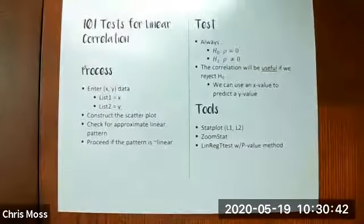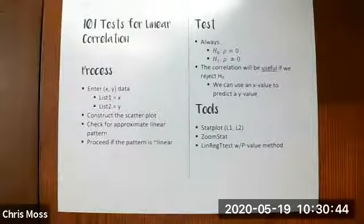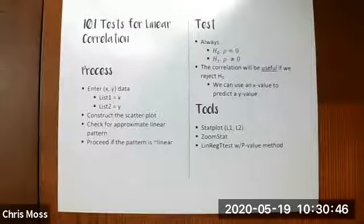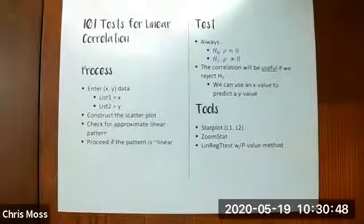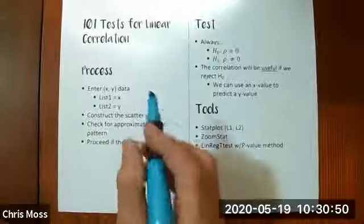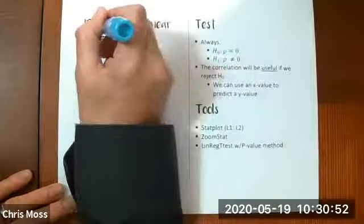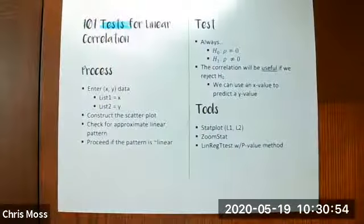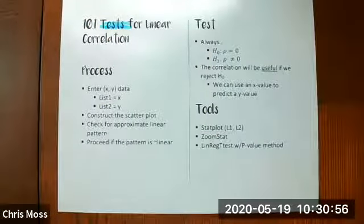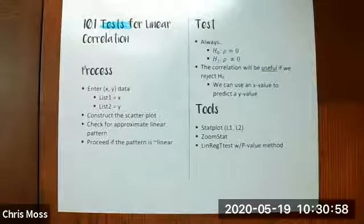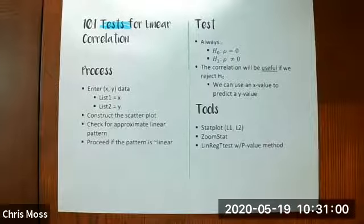Alright, I've done things a little bit differently this time. I've actually written the stuff out first. And we'll see if this goes any better. So 10.1 tests for linear correlation. There's a very distinct process here that we run through. It really doesn't change, which is kind of nice.